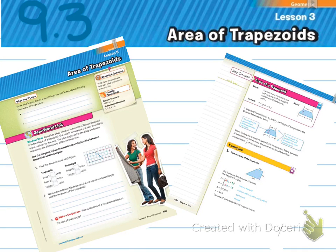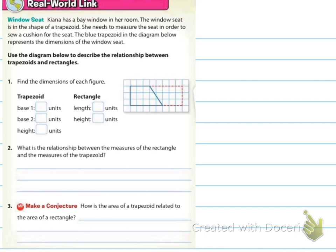Okay, we're looking at 9.3 area of trapezoids, and it looks like it starts on page 685. So go ahead and turn to 685 if you're not already there. The real world link says that Kiana has a bay window in her room. The window seat is in the shape of a trapezoid. She needs to measure the seat in order to sew a cushion. The blue trapezoid in the diagram below represents the dimensions of the window seat.